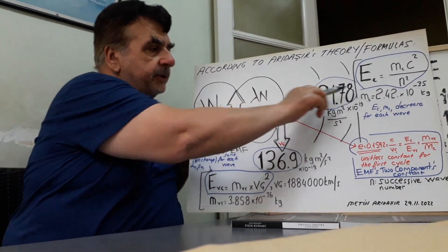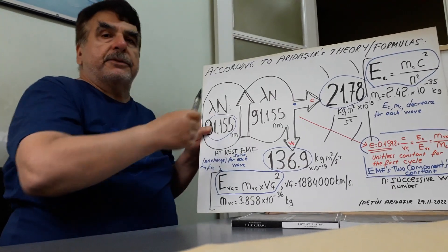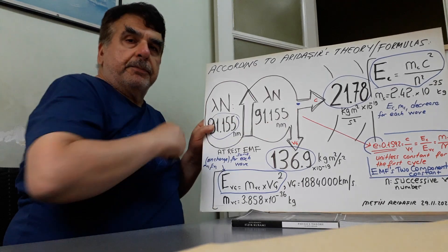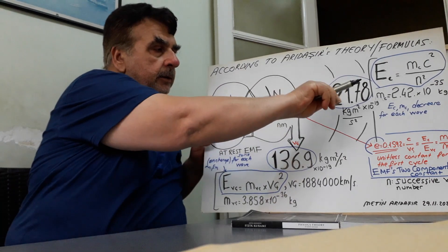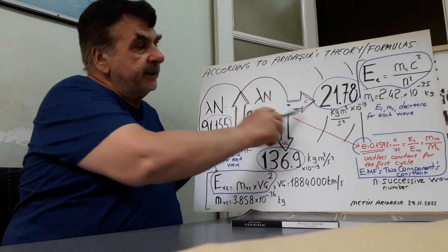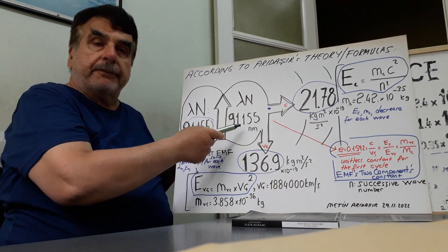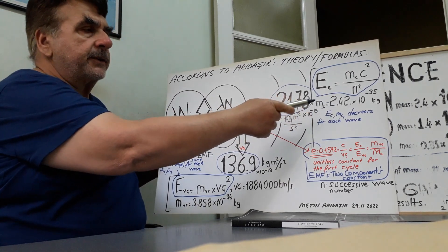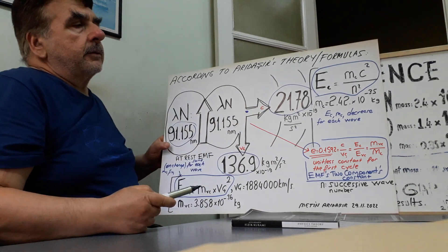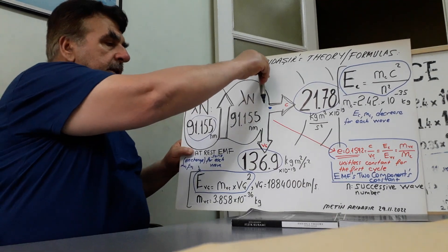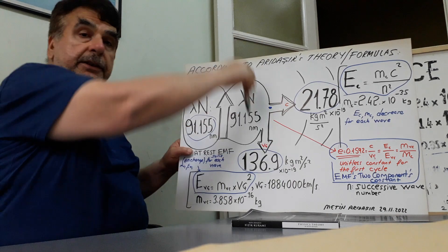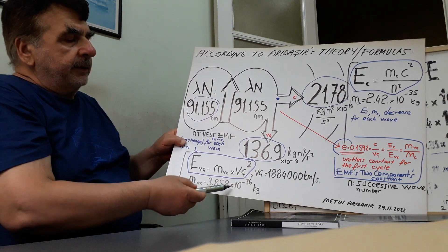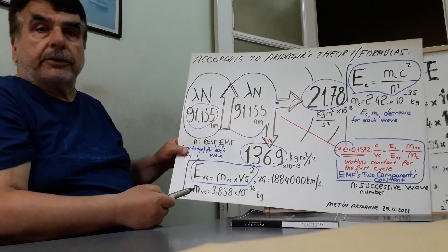I have computed, in this direction — the speed of light direction. Think of perpendicular to this shape, perpendicular to the circle. The speed of light component mass I have computed for 91.155 nanometer is 2.42 × 10⁻³⁵ kilogram. And the 1,884,000 kilometer per second linear velocity component mass I have computed is 3.858 × 10⁻³⁶ kilogram.